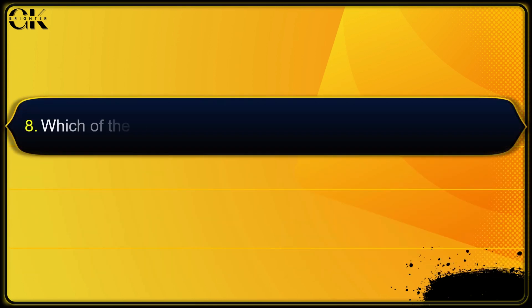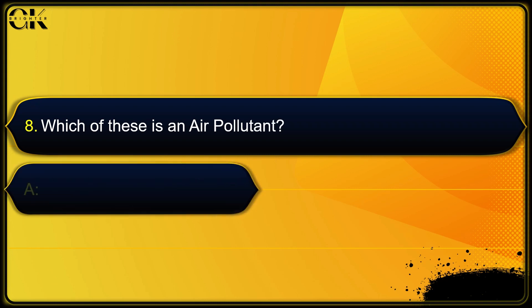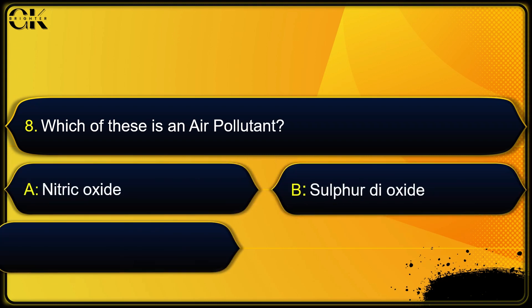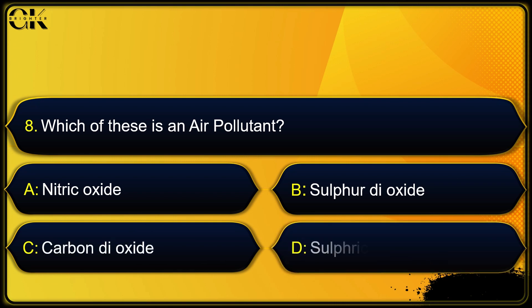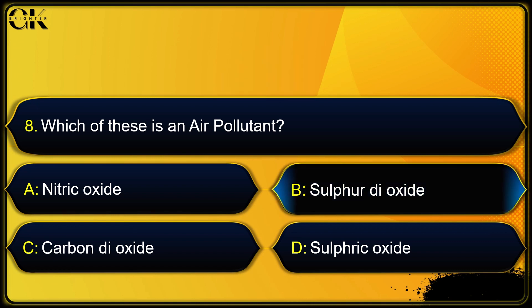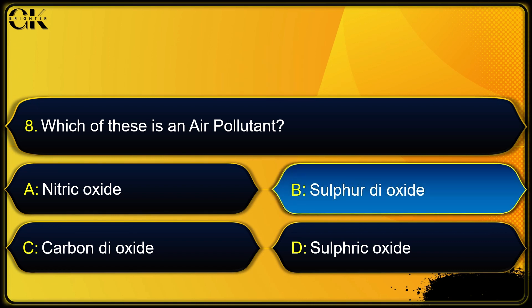Which of these is an air pollutant? Options: nitric oxide, sulfur dioxide, carbon dioxide, or sulfuric acid oxide. The answer is sulfur dioxide.